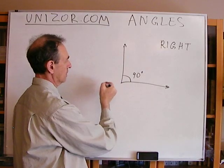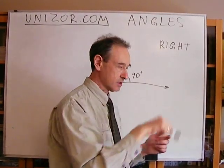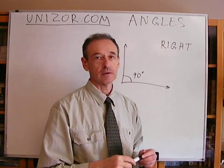And then we have half a circle, which is 180, and the full circle, or full angle, which is 360.